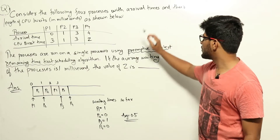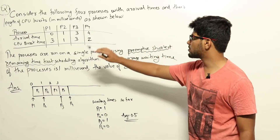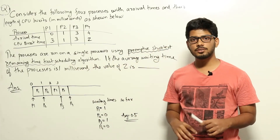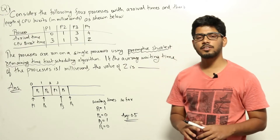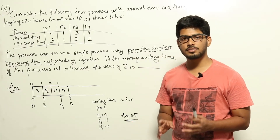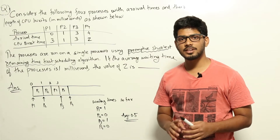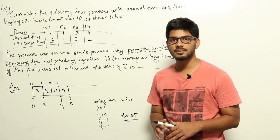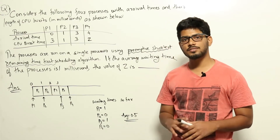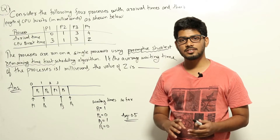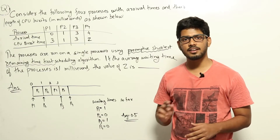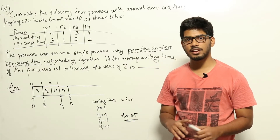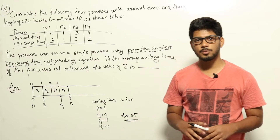In preemptive Shortest Remaining Time First scheduling, we choose the process with the shortest remaining time and allocate the CPU to it. While a process is running, if a new process arrives with an even shorter remaining time, we preempt the current process and allocate the CPU to the new one. After the new process finishes, the CPU is returned to another process.